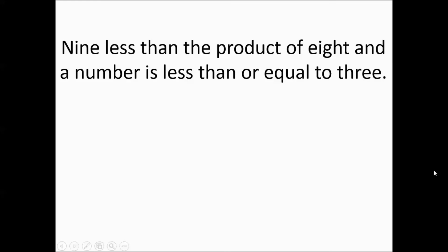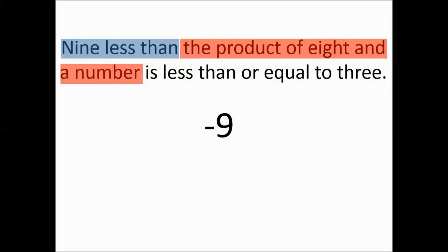Nine less than the product of eight and a number is less than or equal to three. So a lot of less thans again. This can get confusing. Let's just start it, break it down piece by piece. Nine less than is going to be nine less than. The product of eight and a number, product always means multiply. So you have that. And then is less than or equal to three. That's going to be the inequality with a bar underneath, showing that it can actually work out to the number. And there you go.